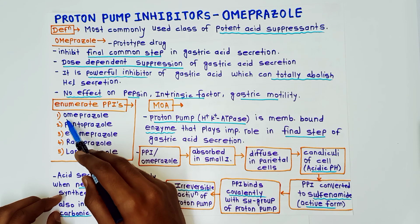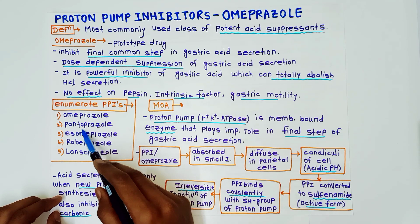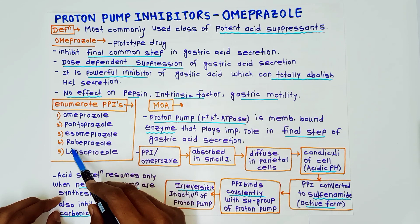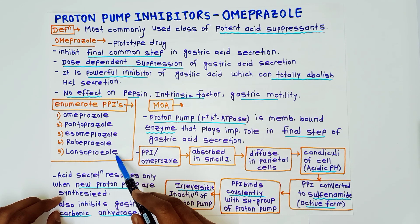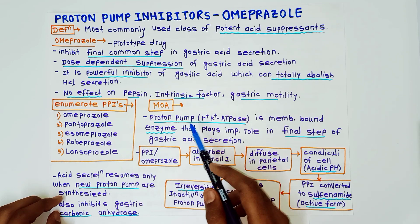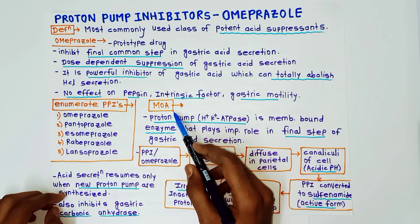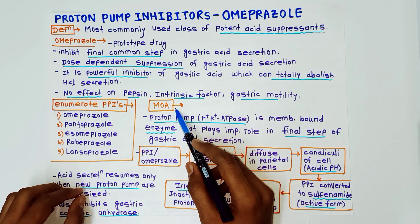To enumerate the proton pump inhibitors — they are easy to remember: omeprazole, pantoprazole, esomeprazole, rabeprazole, and lansoprazole.